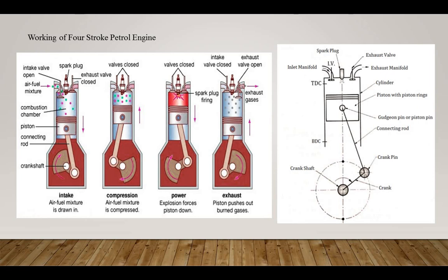The burnt gases, also called residual gases, move out through the exhaust stroke. Then the inlet valve opens and a new cycle starts. This is the working of the four-stroke petrol engine.